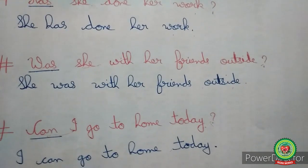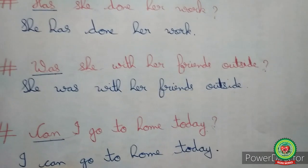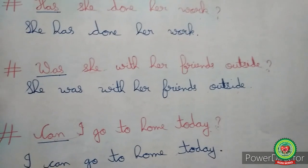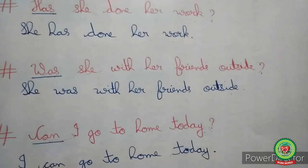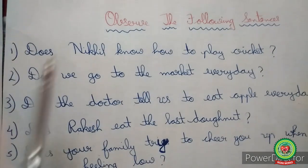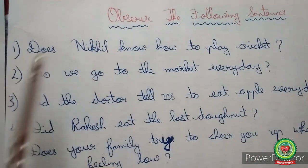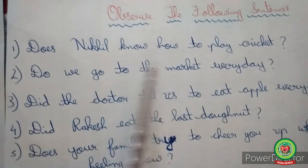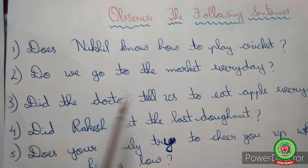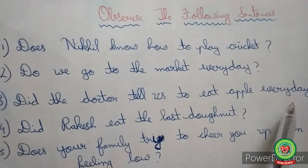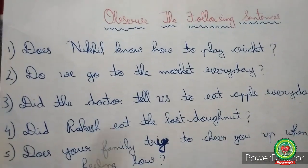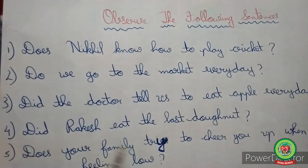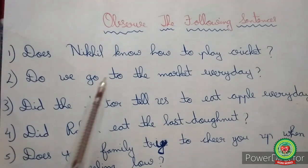Further, we will understand how to change an interrogative sentence into a statement with 'do,' 'does,' or 'did.' Observe the following sentences: 'Does Nikhil know how to play cricket?' 'Do we go to the market every day?' 'Did the doctor tell us to eat apple every day?' 'Did Rakesh eat the last donut?' 'Does your family try to cheer you up when you're feeling low?' These sentences all begin with do, does, or did.